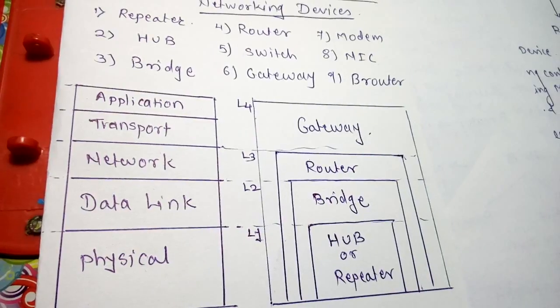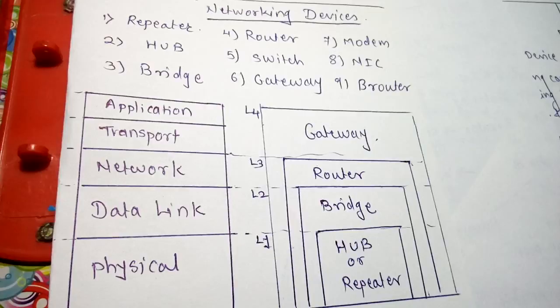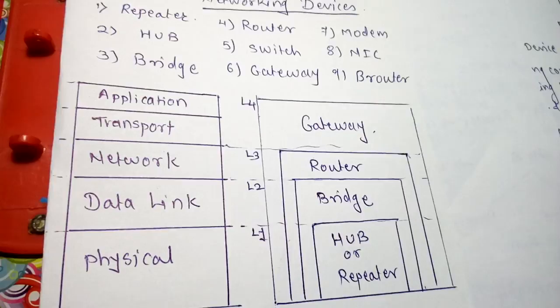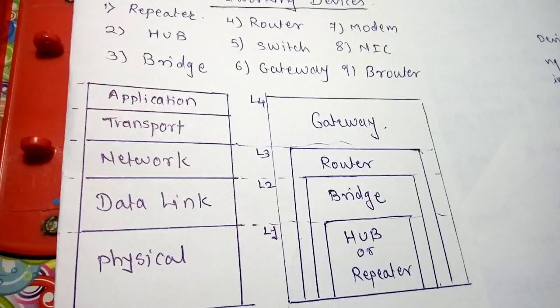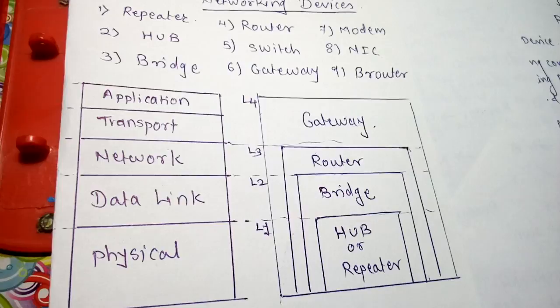Good morning students. The next lecture is based on networking devices. The list includes repeater, hub, bridge, router, switch, gateway, modem, NIC, and browser. Out of these, the router and gateway are called internetworking devices, while repeater and hub are called networking devices.